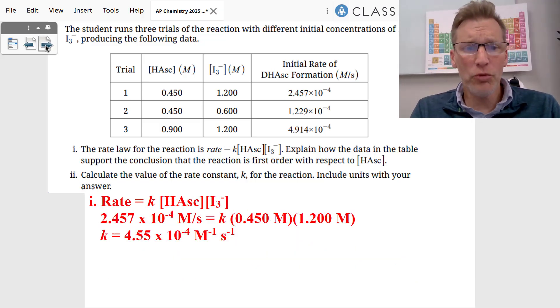Well, they gave us the rate law. Rate equals K times the ascorbic acid times the I3 minus. You can take any trial, trial one, trial two, trial three, just stay consistent. Plug in your data. I plugged in trial one for mine and I got a K of 4.55 times 10 to the negative fourth.